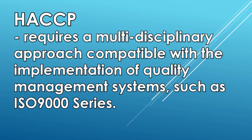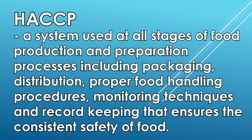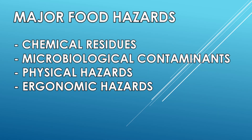HACCP requires a multidisciplinary approach compatible with the implementation of quality management systems such as the ISO 9000 series. HACCP is a system used at all stages of food production and preparation processes including packaging, distribution, proper food handling procedures, monitoring techniques, and record keeping that ensures the consistency and safety of food.